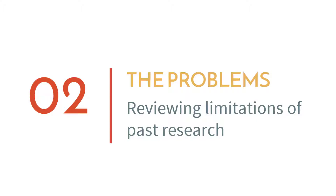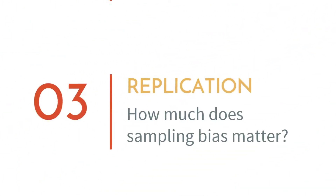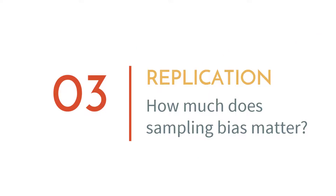We'll then shift attention to the problems with past research — reviewing the limitations of prior research — and then talk about Burstein's approach to how he collects his own data and how he replicates past research on public opinion in order to really get to the bottom of the question: how much does sampling bias matter?